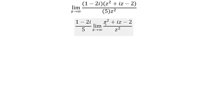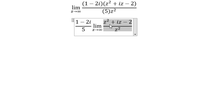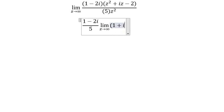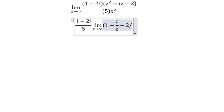Then we have z squared plus iz minus 2 over z squared. We divide by z squared, and we get 1 plus i over z minus 2 over z squared.